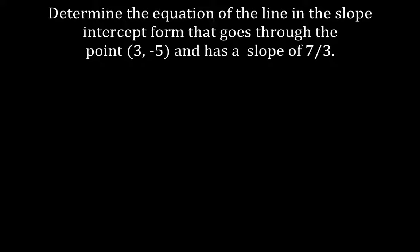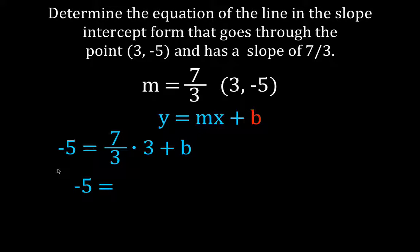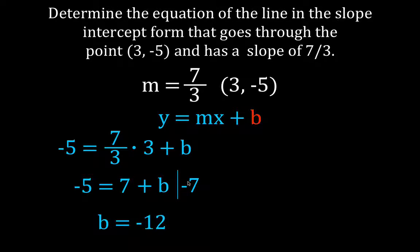For the next example, we have the point (3, minus 5) and a slope of 7 thirds. So m equals 7 thirds and the point is (3, minus 5). We need to find b. Plugging in: minus 5 equals 7 thirds times 3 plus b. 7 thirds times 3 — the 3s cancel — gives 7. So minus 5 equals 7 plus b. Subtract 7 from both sides, and b equals minus 12.